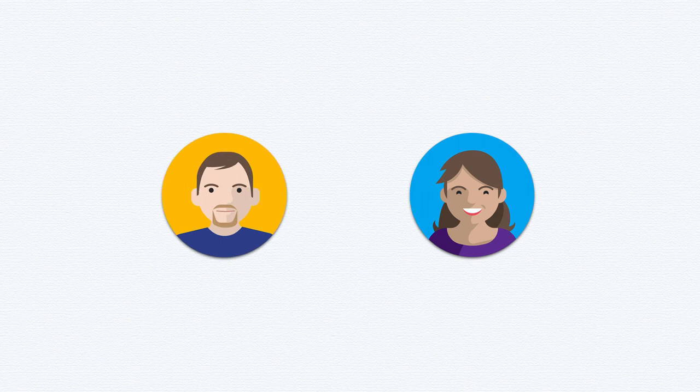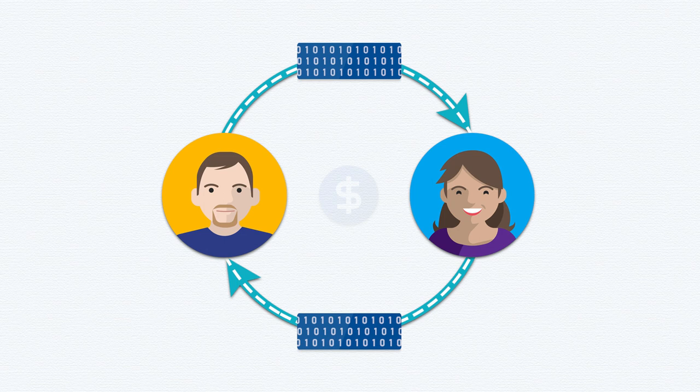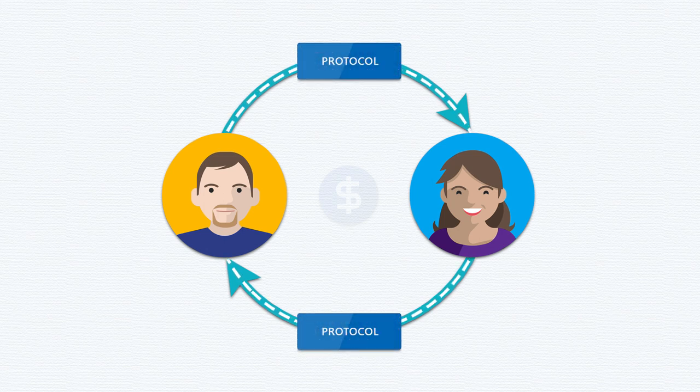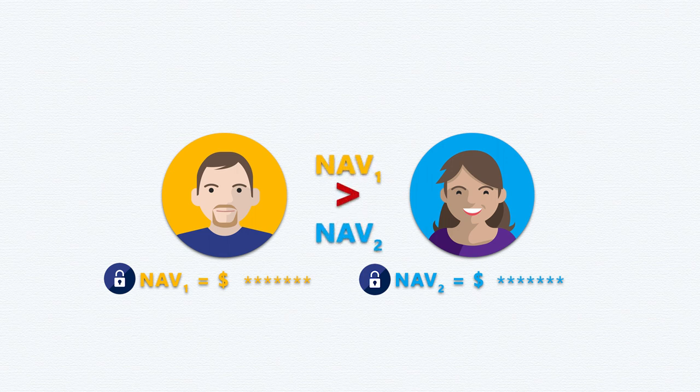It seems like this task is impossible. However, cryptographers using sophisticated mathematical techniques have figured out that you can compute this. You and I can execute a protocol by sending bits of information back and forth, and at the end of the protocol we have a strong mathematical guarantee that the only information we learn is who is the richer person amongst us.